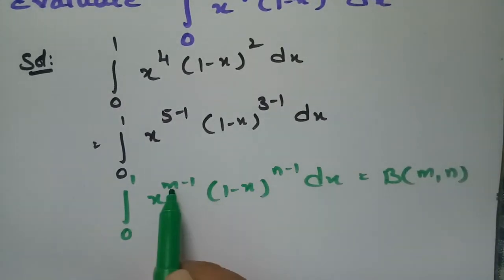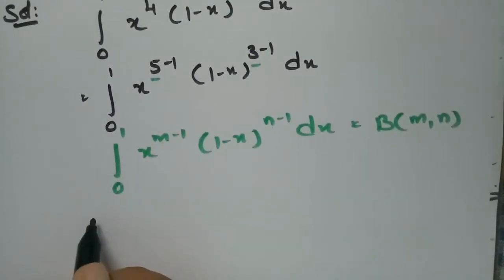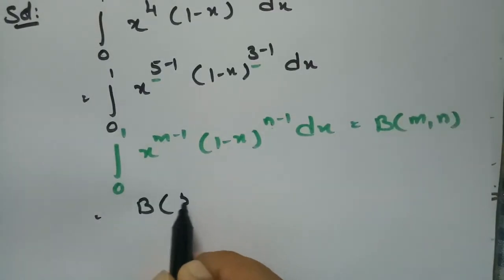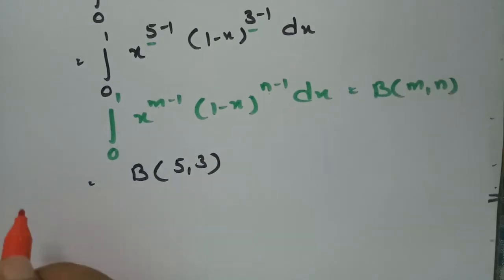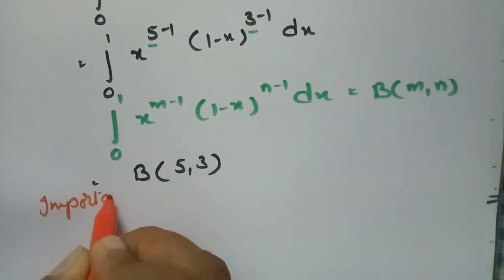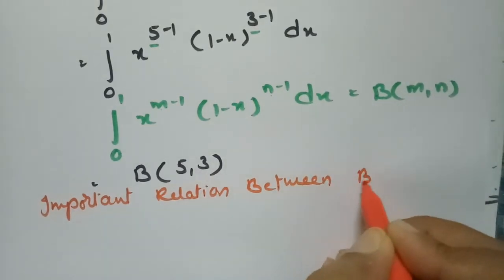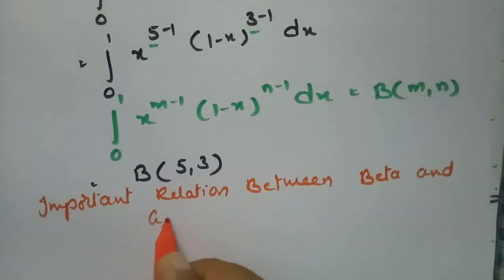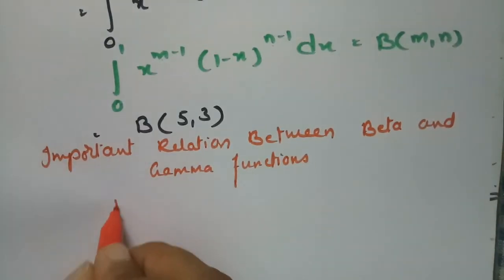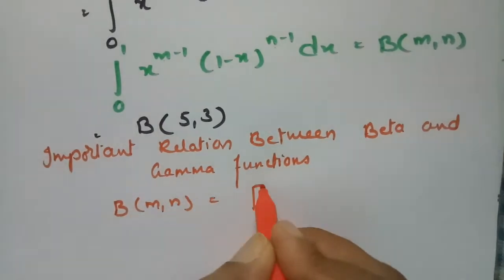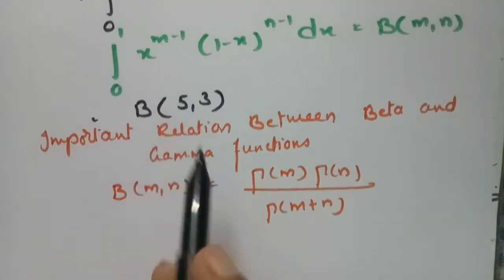So this is beta of m comma n, where in place of m we have 5 and in place of n we have 3. And we have an important relation between beta and gamma functions: beta of m comma n is equal to gamma(m) into gamma(n) divided by gamma(m plus n).